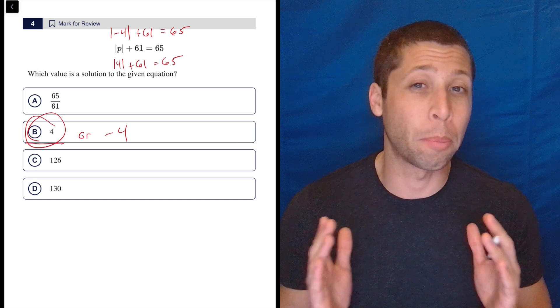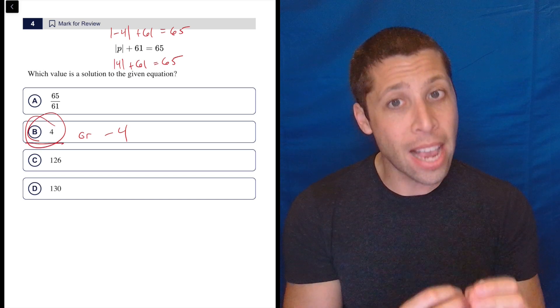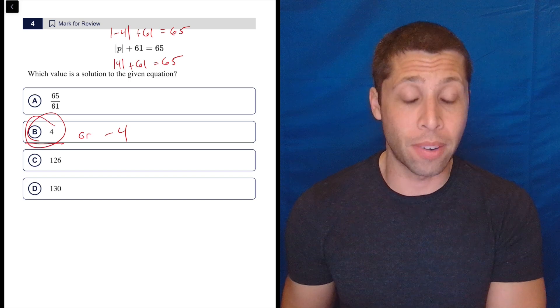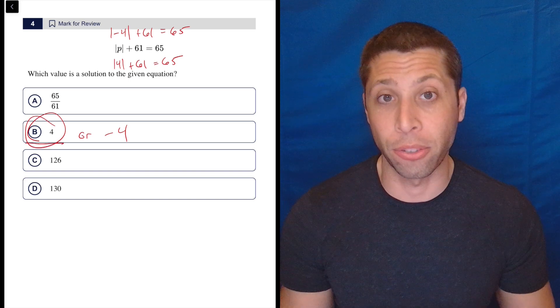That's what those absolute value bars do. They're kind of like parentheses that once you take whatever's inside them and resolve it, if it's a negative number, it becomes a positive number. So this would just become the same thing, four plus 61, and that is also 65.